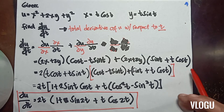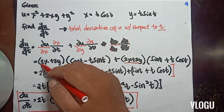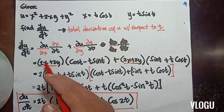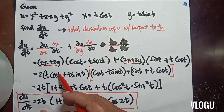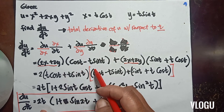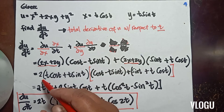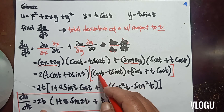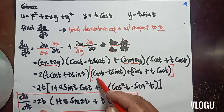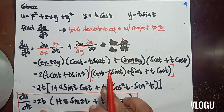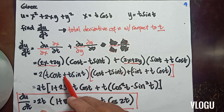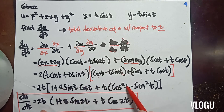So therefore: (2x + 2y) has a common factor. Factor that out. You get 2(x + y). Substituting x = t·cos(t) and y = t·sin(t), you get 2(t·cos(t) + t·sin(t)). Then multiplying: (cosine(t) − t·sin(t)) times (t·cos(t)) plus (sin(t) + t·cos(t)) times (t·sin(t)), and you arrive at the expanded answer.